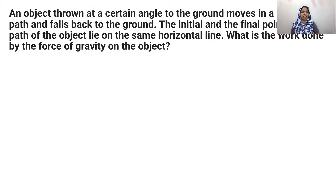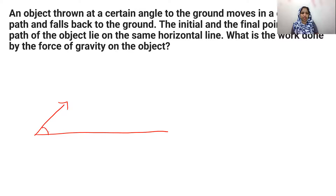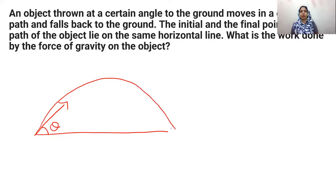Now question number two: an object thrown at a certain angle to the ground moves in a curved path and falls back to the ground. Like a javelin throw or discus throw — the object is thrown at a certain angle, it travels a curved path and comes back to the ground.